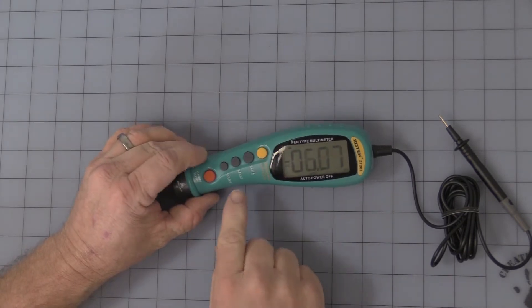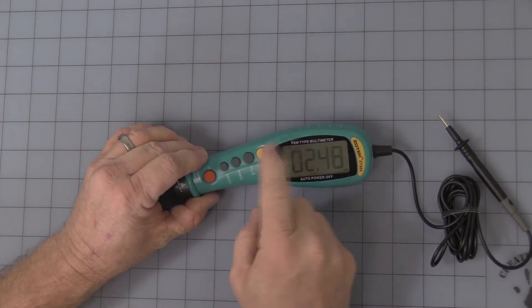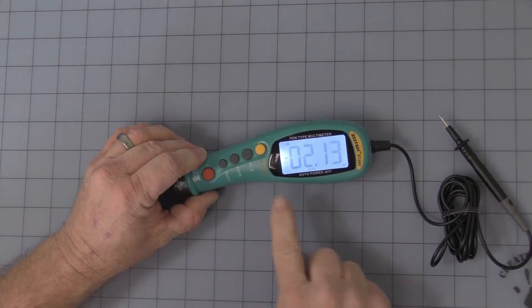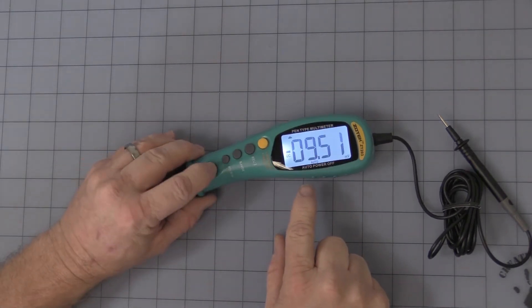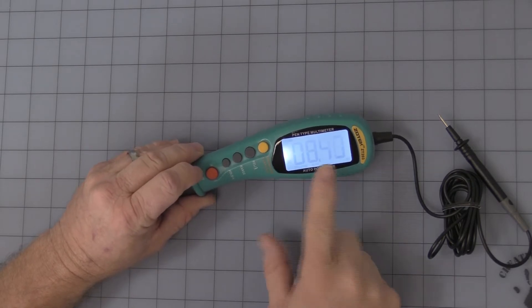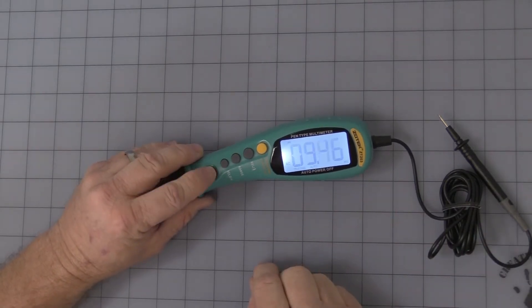You press the button again. Let's turn back on our backlight. This is DC millivolts first range. Hit the red button again and you get to AC millivolts. Really don't have a load to show you.